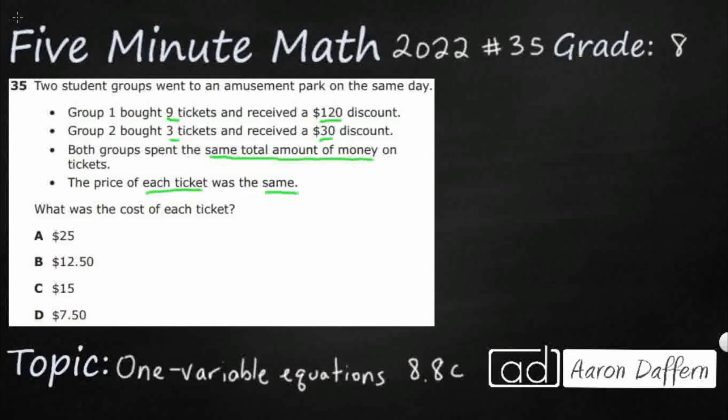So we're looking for the cost of each ticket. We've got some clues here. We don't know what the tickets are going to be labeled. That's the unknown. Let's just go ahead and make that an X. So what do we know about these two groups?